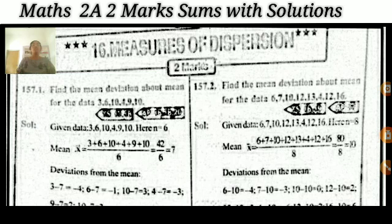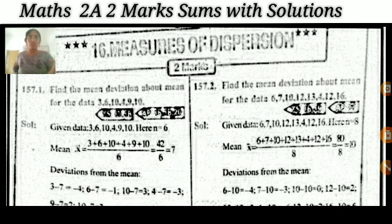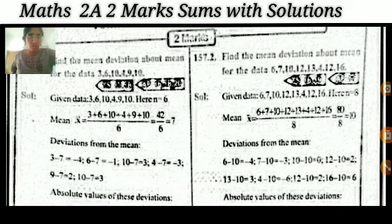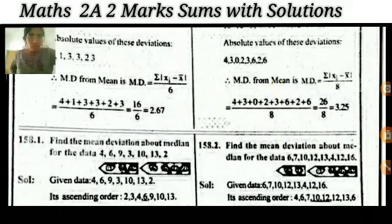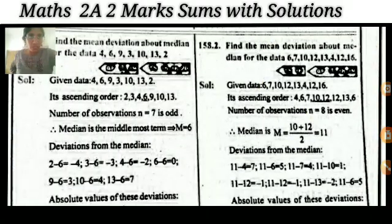The next topic is Measures of Dispersion. In this topic we have a very small number of questions — only about 10. If you prepare those, you will definitely get one question. Models include: find the mean deviation about the mean, and find the mean deviation about the median.